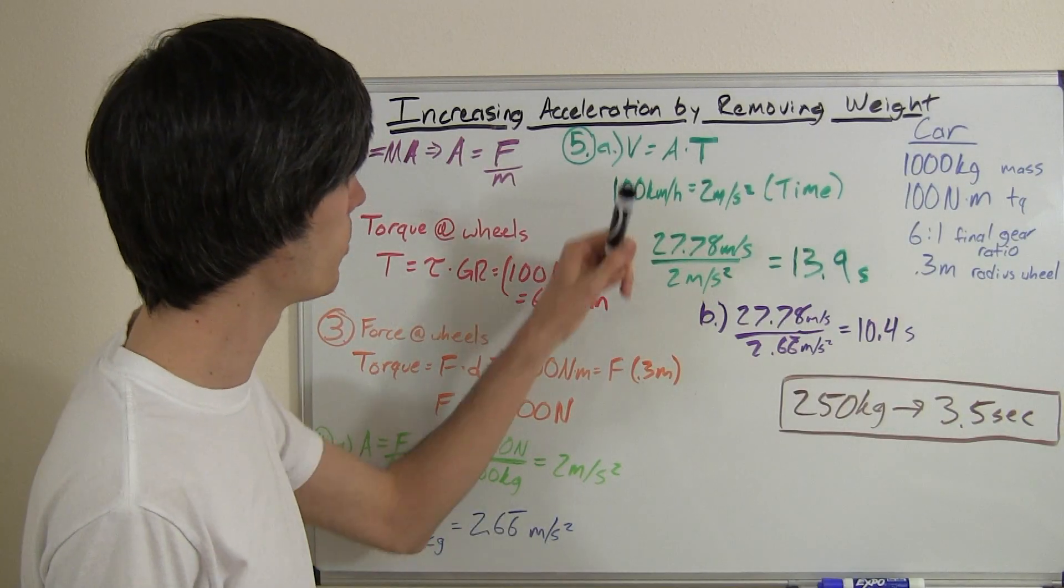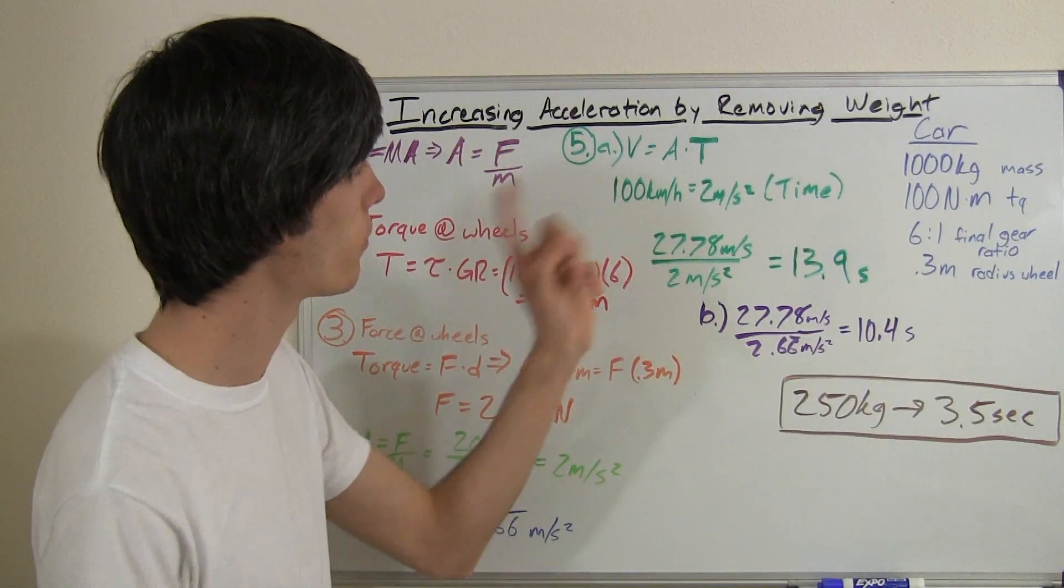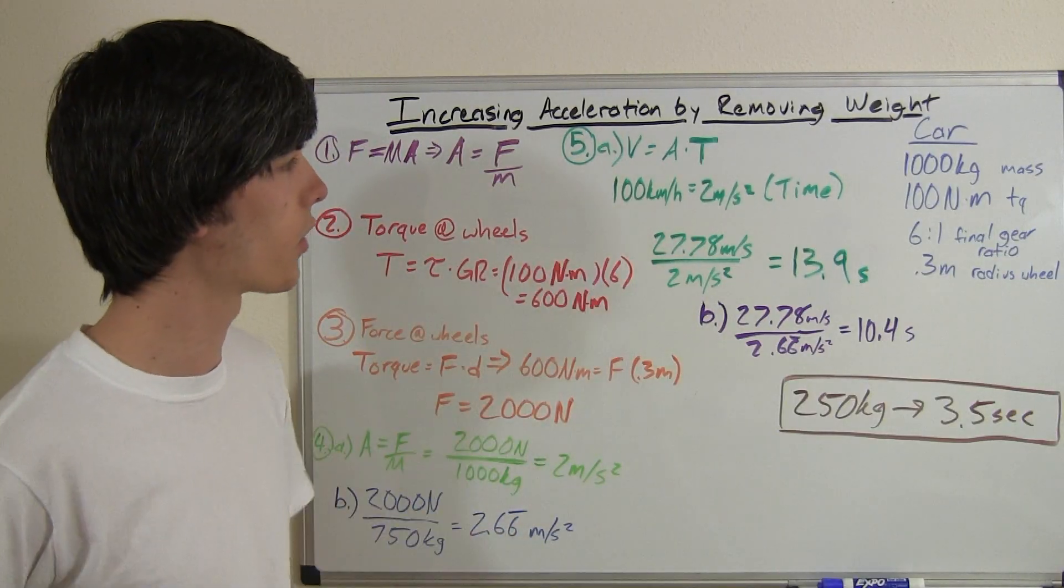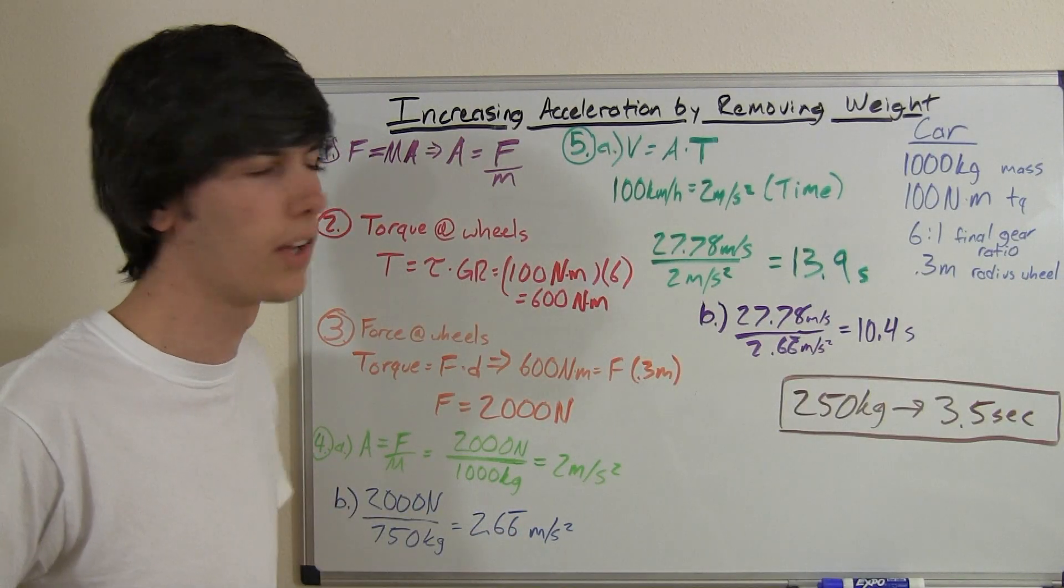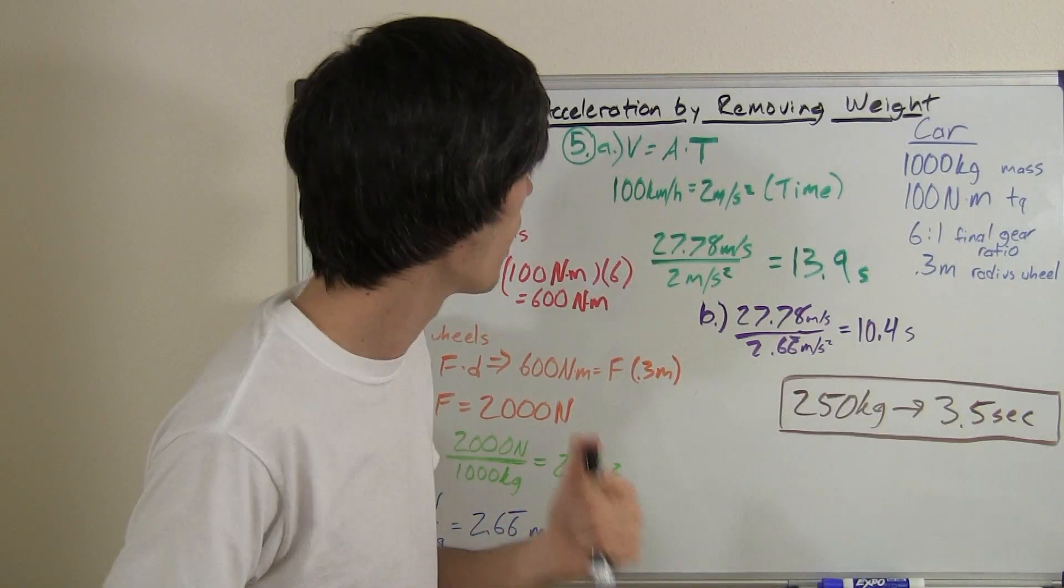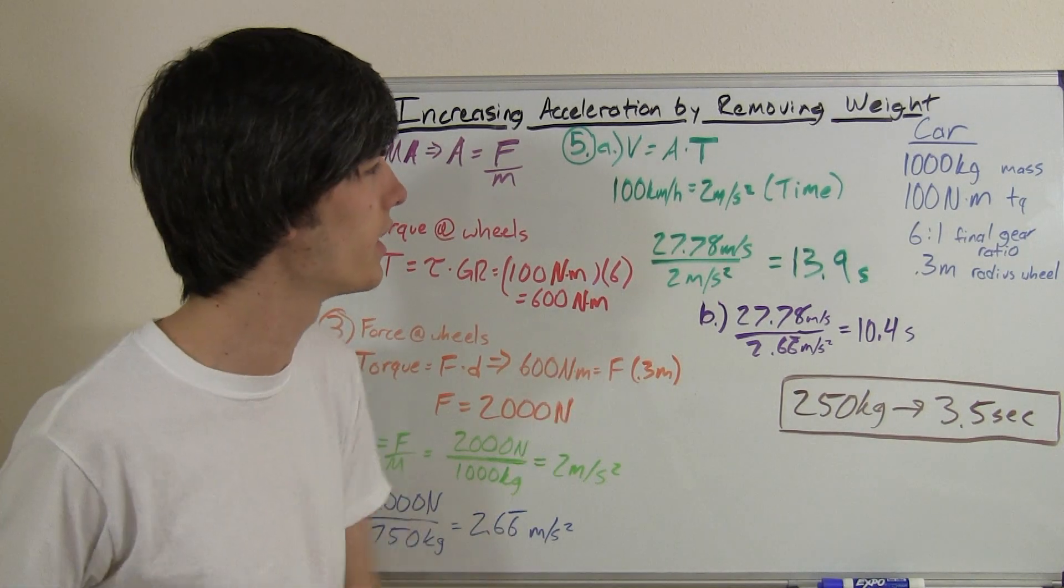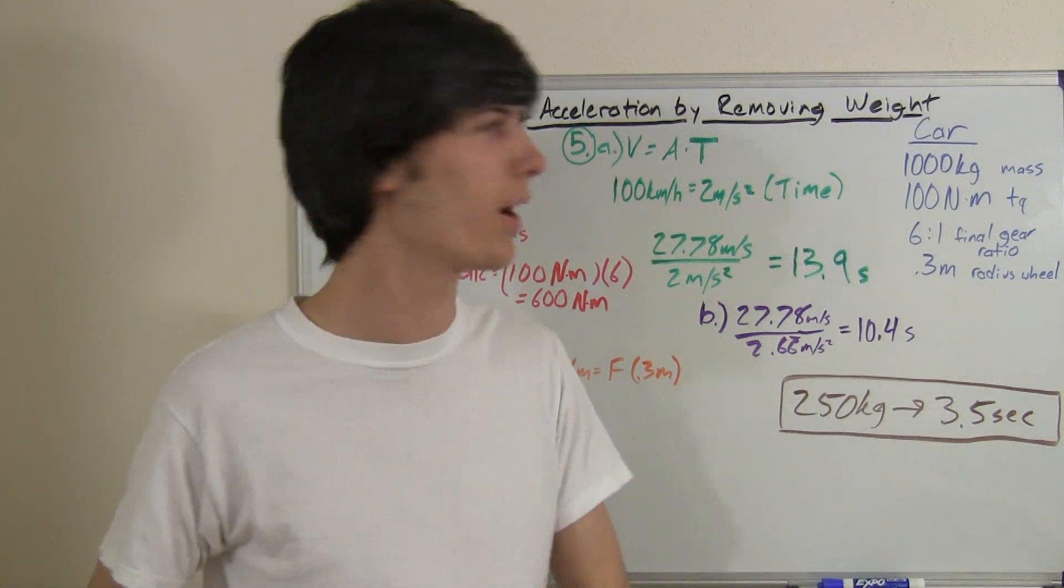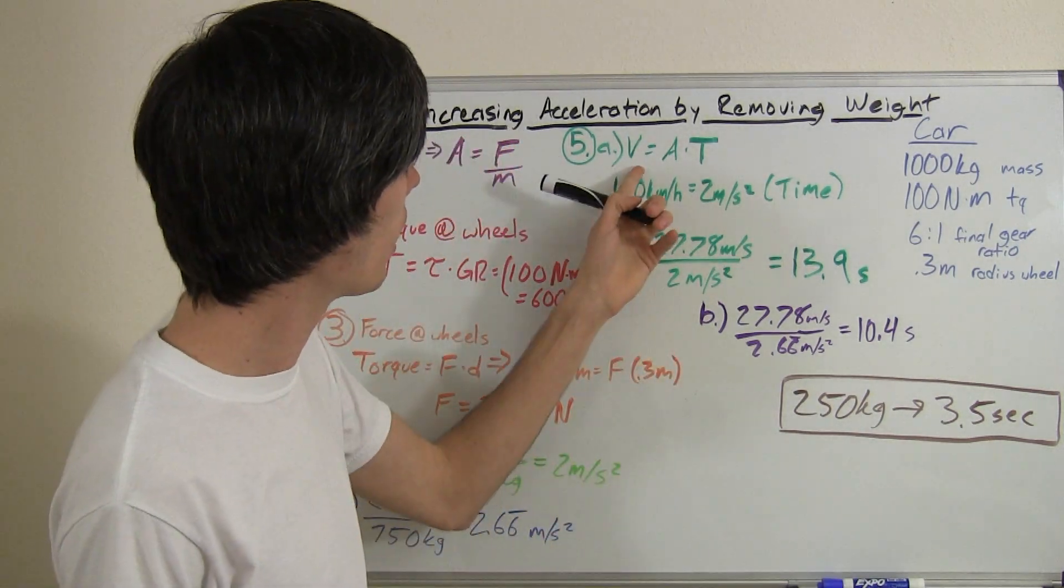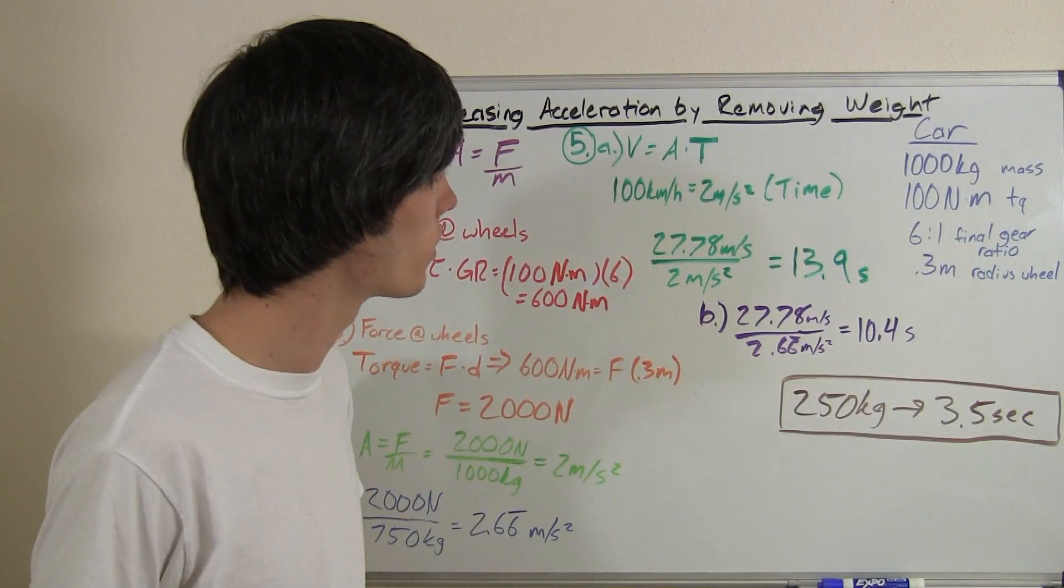So you take that 2 meters per second squared. Now we want to find our speed, the time it takes to get to 100 kilometers per hour. I know all of you guys out in Europe and the rest of the world, you're trying to impress your friends with how quickly you can get to 100 kilometers per hour.